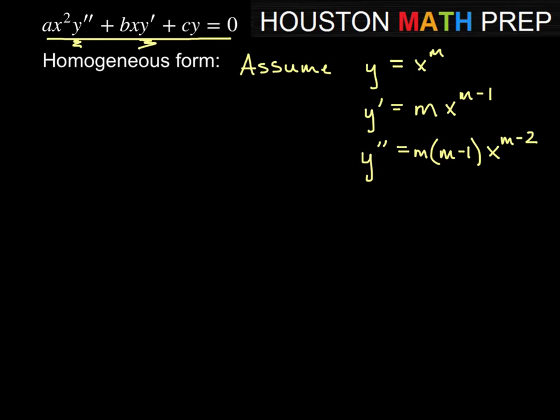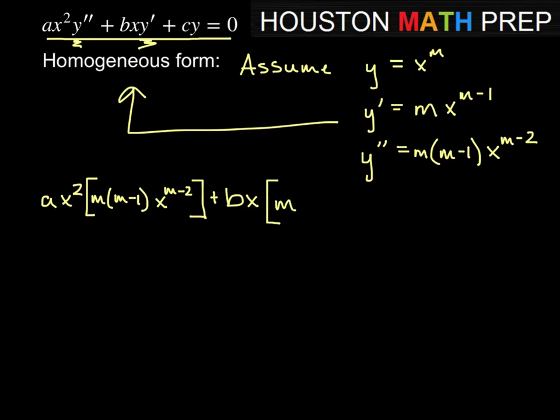Taking all that information and plugging it into this equation, we get a times x squared times y double prime, which is m times m minus 1 times x to the m minus 2, plus b times x times y prime, which is m times x to the m minus 1, plus c times y, which is x to the m, equal to zero.